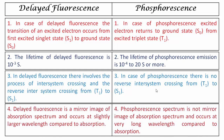The fourth point: delayed fluorescence is a mirror image of the absorption spectrum. As discussed in the characteristics of fluorescence, the fluorescence spectrum and absorption spectrum have a mirror image relationship. Since delayed fluorescence also involves the S1 state, its spectrum has a mirror image relationship with the absorption spectrum and occurs at a slightly longer wavelength compared to the absorption spectrum.